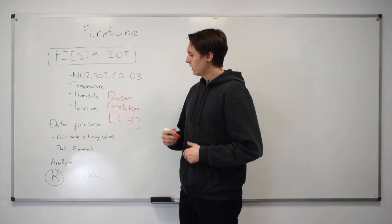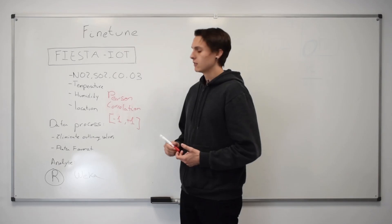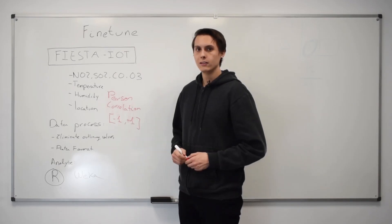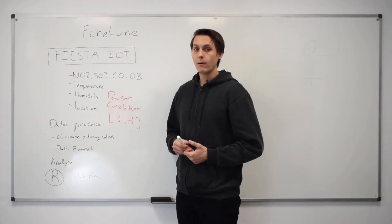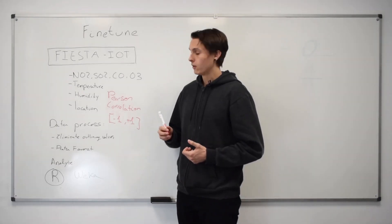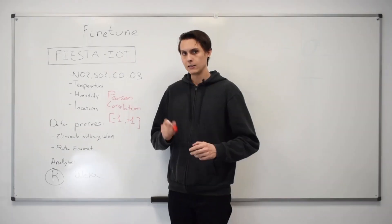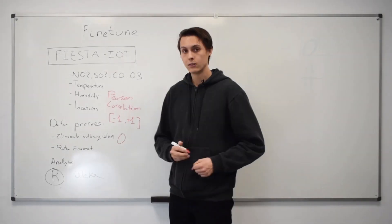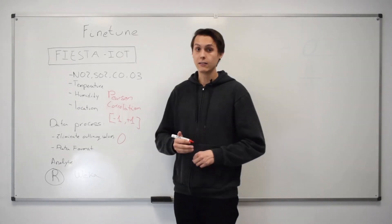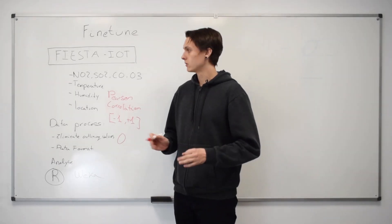And in the opposite, if the correlation is closer to minus 1, that means the opposite. Let's see, if one of the values goes high, the other goes down. But if the index is closer to zero, that means that there is no correlation at all between those two values.